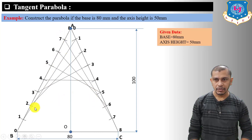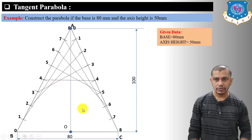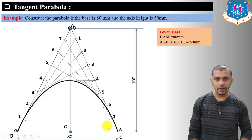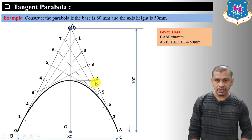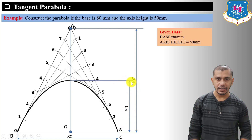Connect corresponding points: 1 to 1, 2 to 2, 3 to 3, 4 to 4, 5 to 5, 6 to 6, 7 to 7. You can see the shape of the parabola forming. Darken the shade and you will get the parabola by tangent method. The axis of the parabola is 50 mm as given.